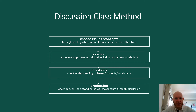Here is the discussion class method that I used, which came from the global approach. First, choose issues and concepts from Global Englishes or Intercultural Communication. Then there is some reading where the issues and concepts are introduced, including necessary vocabulary. Then there are some questions to check understanding of the issues, concepts and vocabulary. Finally, in the production stage, students can show a deeper understanding of the issues and concepts through discussion.